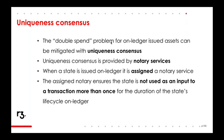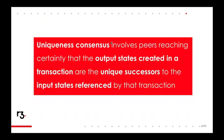The double spend problem is mitigated by notary services. When a state is issued on-ledger for the first time, it's assigned a notary service, and that notary ensures that particular state cannot be double spent — it cannot be used as an input to a transaction more than once for the duration of its lifecycle. If it's used, that state is marked as historic and a new version is created. When that new version is used, it's again marked as historic and another is created. So it's impossible to reuse the same state twice. Uniqueness consensus involves peers reaching certainty that output states created in a transaction are the unique successors to the input states, such that a double spend cannot occur on the Corda ledger. In the next webinar we'll talk about how notary services are implemented.